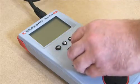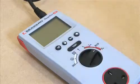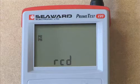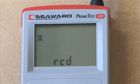Select RCD on the PrimeTest 220 rotary switch. The instrument will check the incoming mains supply for correct live neutral polarity and a valid earth connection.